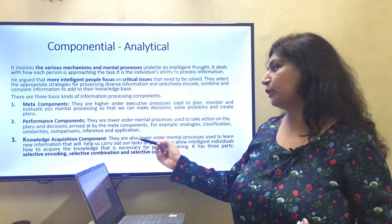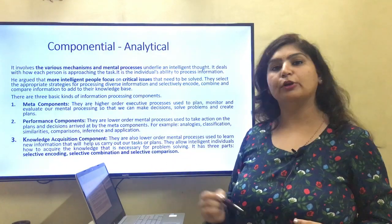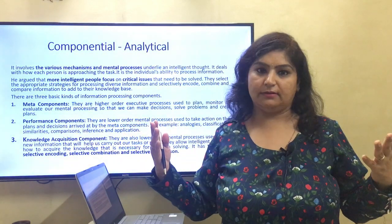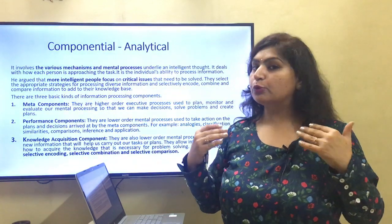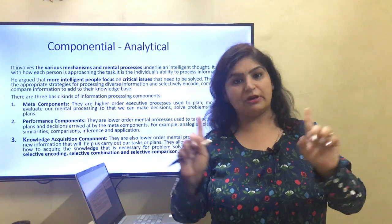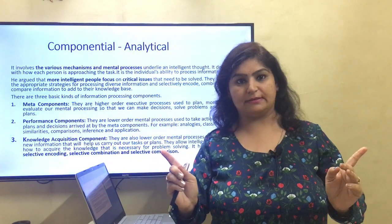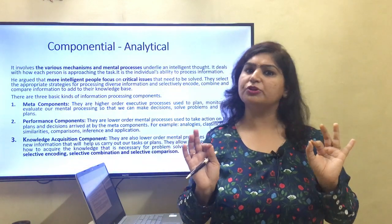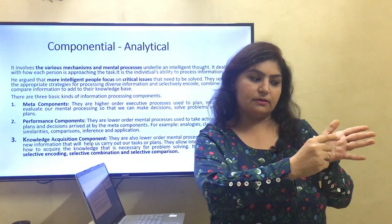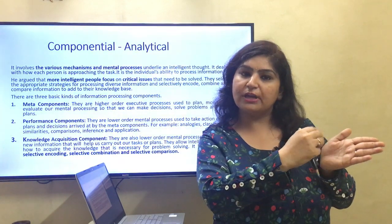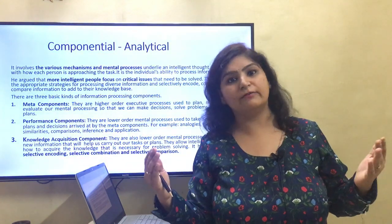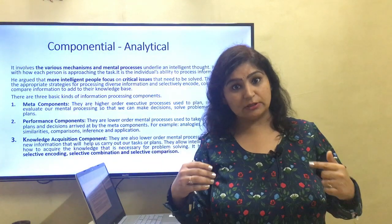Knowledge acquisition components have three parts: selective encoding, selective combination, and selective comparison. Selective encoding means you have lots of information but cannot encode everything, so intelligent people select what is relevant. For example, a teacher who has to cover an entire syllabus in three months — if she is intelligent, she identifies which topics are relevant and important, takes up those relevant concepts, and leaves the irrelevant ones. This is selective encoding.